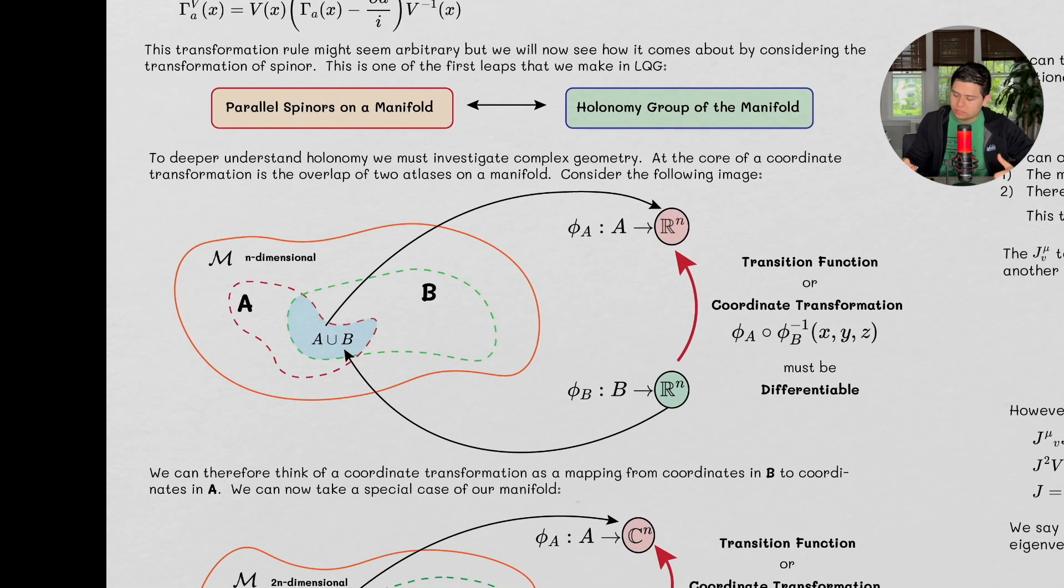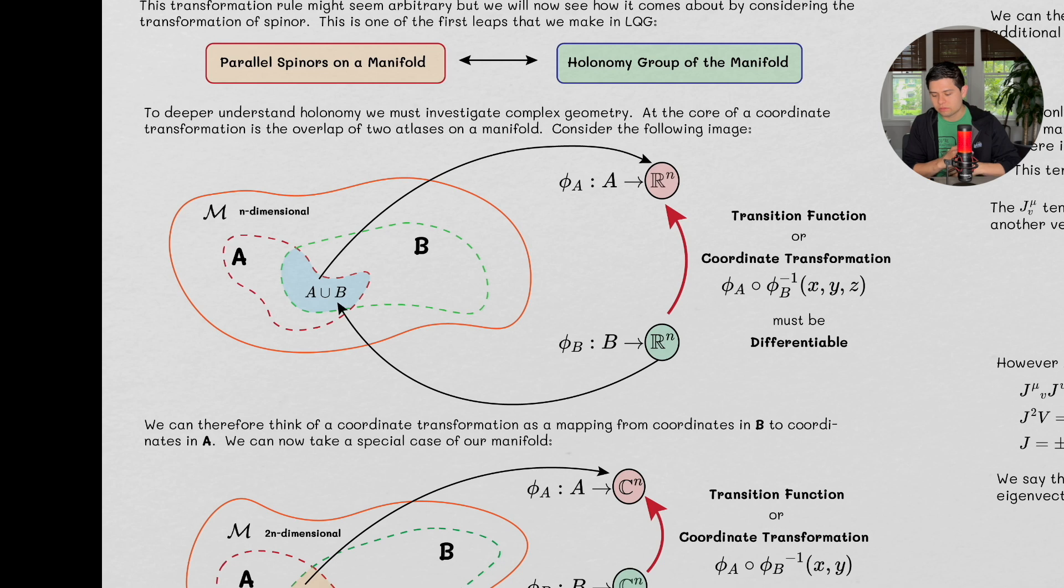So, to get a deeper understanding of holonomy, let's start off by investigating complex geometry. At the core of a coordinate transformation is the overlap of two atlases on a manifold.